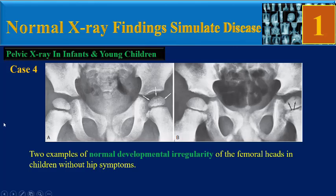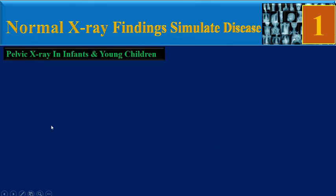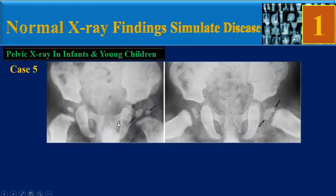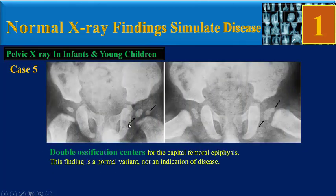Case 4: two examples of normal developmental irregularity of the femoral heads in children without hip symptoms. This is a three-year-old boy, and this one is a four-and-a-half-year-old boy.